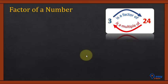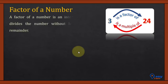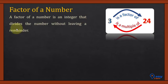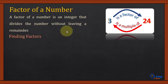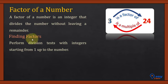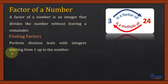What is a factor of a number? A factor of a number is an integer that divides a number without leaving a remainder. To find factors, perform a division test with integers starting from 1 up to the number.